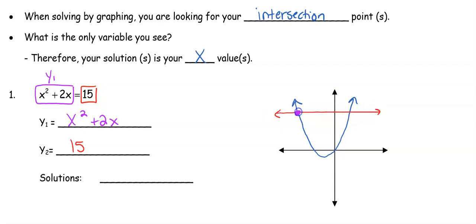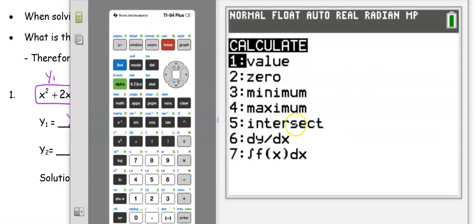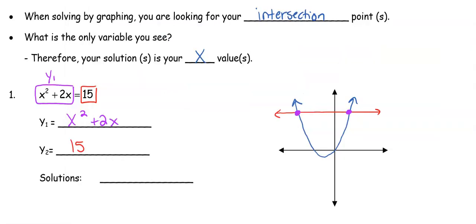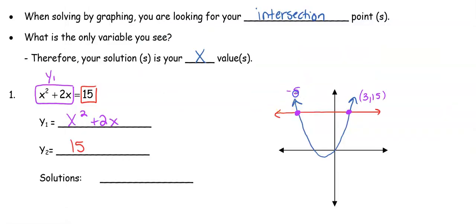Okay, and then I'm going to again be looking for these intersection points. Back to the calculator, second trace, number 5 is that intersection, enter, enter, enter. It'll bring you to the first of the intersection points, which is 3, 15. Now we got to do it all over again. Second trace, number 5, enter, enter, enter. Now you got to scroll. Remember, you have to go more than halfway to the other point because it's going to calculate the point that is the one that it's closest to, and this one is at negative 5, 15. So remember, we are looking for the x values. So we have a solution at x equals negative 5, or a solution at x equals 3.